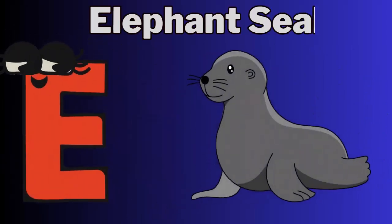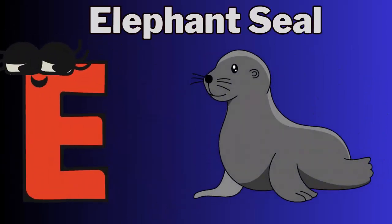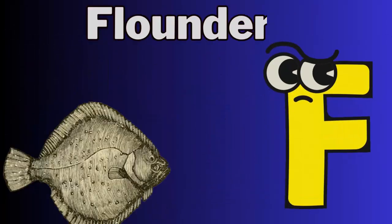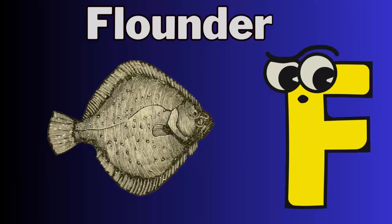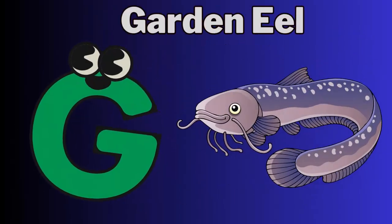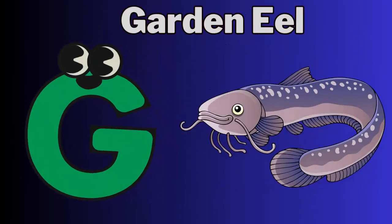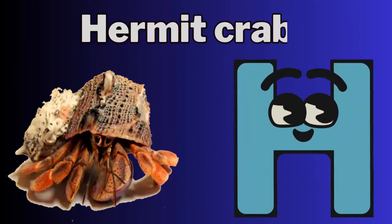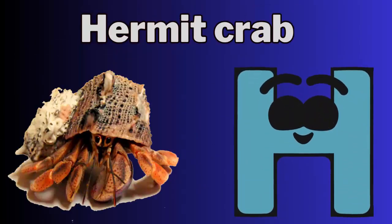E for Elephant Seal. F for Flounder. G for Gardening. H for Hermit Crab.